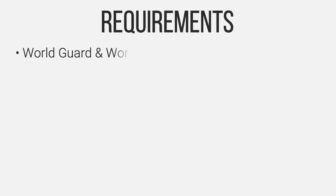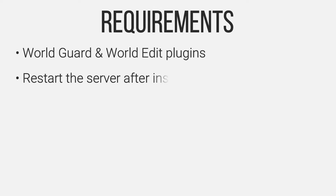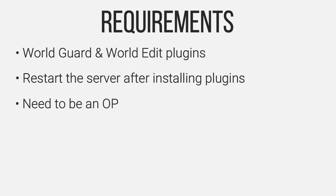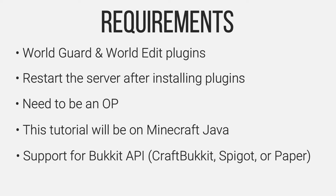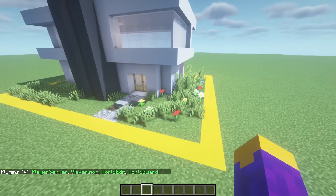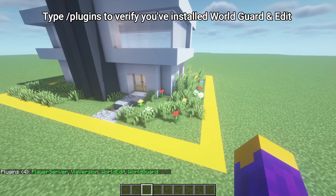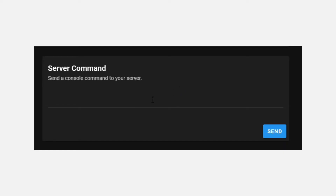Let's go over some basic requirements before we start. You'll need both WorldGuard and WorldEdit. Restart the server once you've installed the plugins. You can only do this tutorial if you're an operator on the server. You need to be on the Java version of Minecraft. Your server needs to support the Bukkit API. Then head to the server console and type op, then your name, to make sure you're an operator.